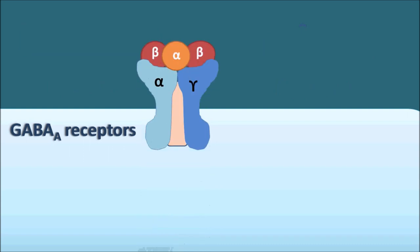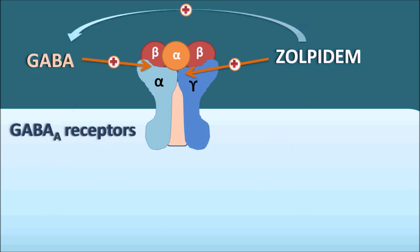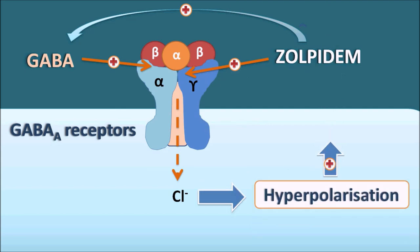The GABA-A receptors are ionotropic receptors composed of five subunits. Zolpidem can bind to the benzodiazepine binding site located between the alpha and gamma subunits. Once Zolpidem binds to this location, it activates GABA so that GABA can bind to the GABA binding site. The binding sites of Zolpidem and GABA are completely different, so Zolpidem acts as a positive allosteric modulator, increasing GABA binding. Once GABA binds, the chloride channel opens, leading to hyperpolarization and induction of sleep.